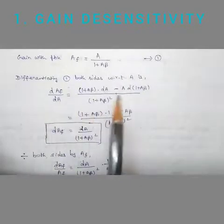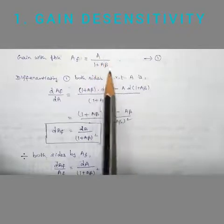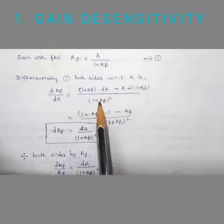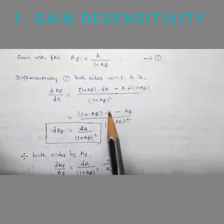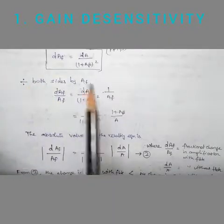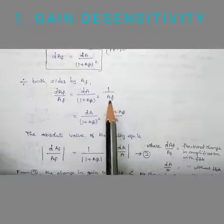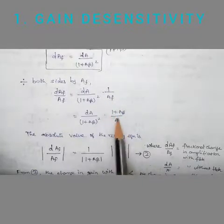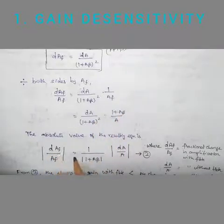Equation one is differentiated with respect to A. Applying the u/v differentiation formula, we get v·du minus u·dv divided by v-squared. Differentiating with respect to A, we get dAF equals dA divided by (1 plus A·beta) squared. Dividing both sides by AF, and substituting AF equals A/(1 plus A·beta), we arrive at dAF/AF equals (1/(1 plus A·beta)) times dA/A. This is equation two.